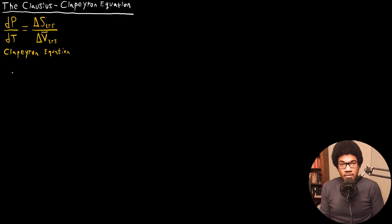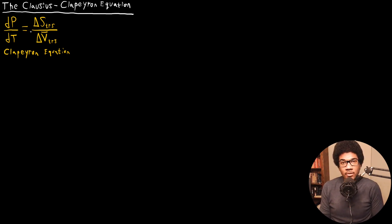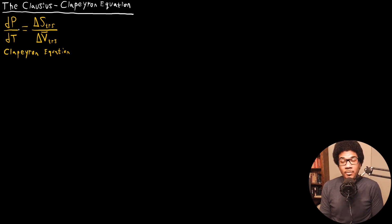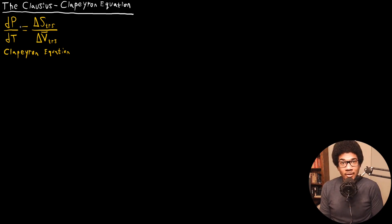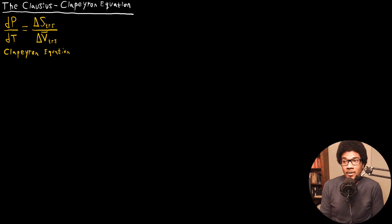In this video, we're going to discuss the Clausius-Clapeyron equation. In a previous video, we looked at the general Clapeyron equation, which gave us a general expression for the slope of a phase diagram. A phase diagram looks at varying pressure with respect to temperature, and that slope would be dp/dT. This gives us a way to relate the slope of a phase diagram to intrinsic properties of a phase transition — its entropy of the transition and the change in molar volume for the transition.